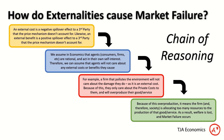Because of that overproduction, the firm, and therefore society as a whole, is allocating and using too many resources to the production of that good or service. Maybe there are machines going towards making cigarettes that, in the optimal allocation, would not be making cigarettes — they'd be making something else. That's the misallocation of resources. As a result, we lose welfare and we get market failure.